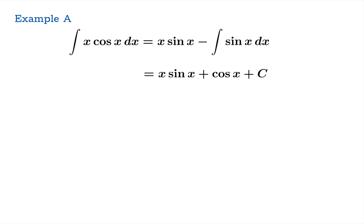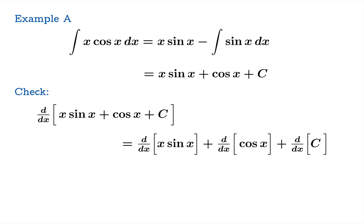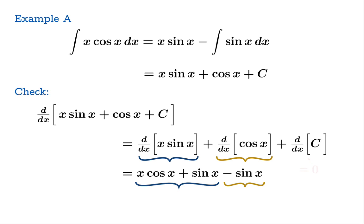Integration by parts allows us to evaluate the product this way. Now let's check — we should make sure that when we take the derivative of our answer we recover the original integrand. Applying the product rule gives us one term, the derivative of cosine is negative sine, the derivative of the constant is zero. We get some cancellation, and lo and behold, we get x cosine x. So the integration by parts formula really did do the job.